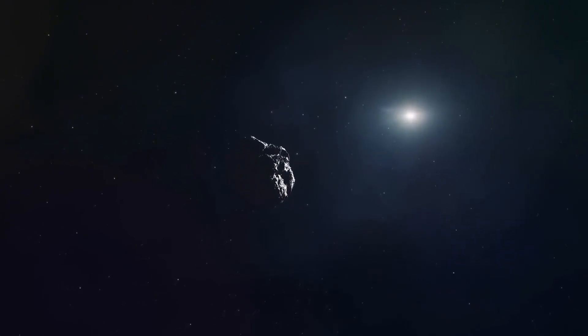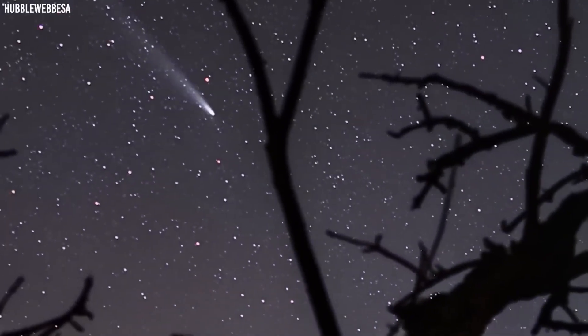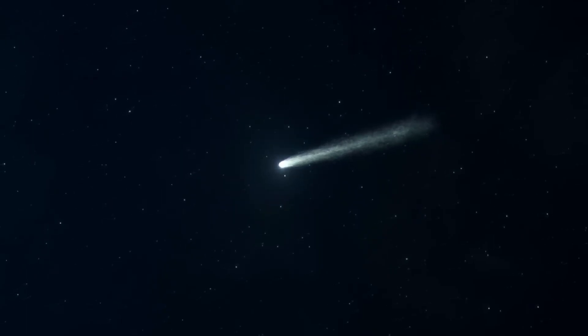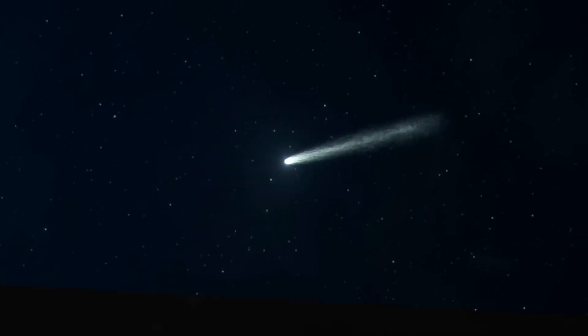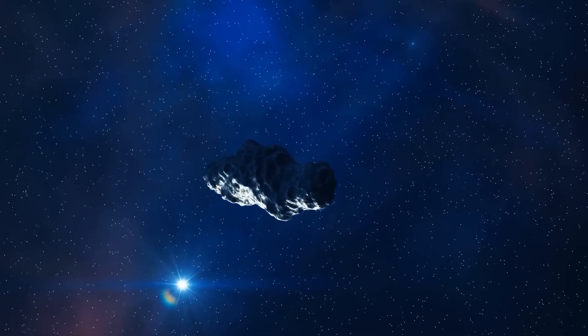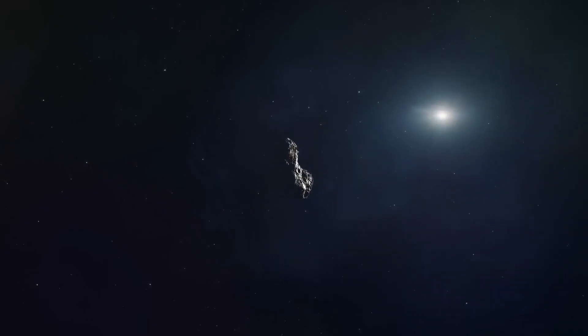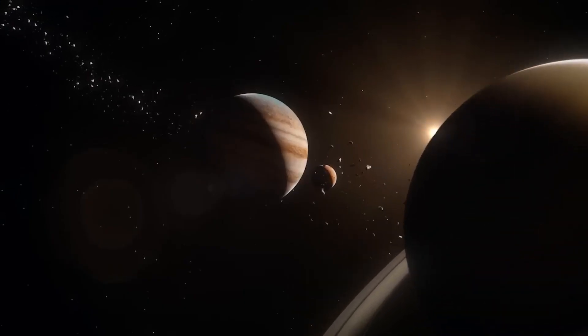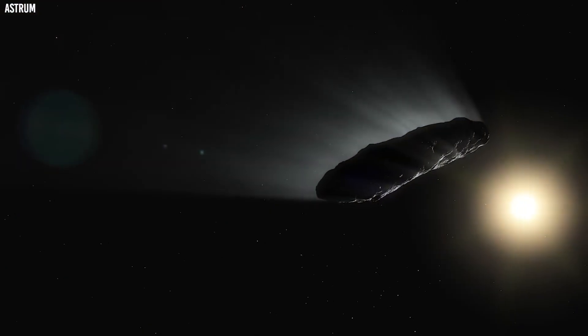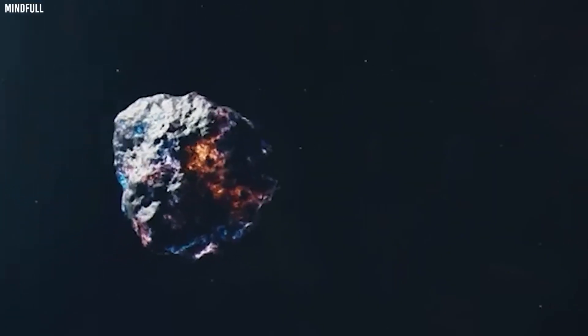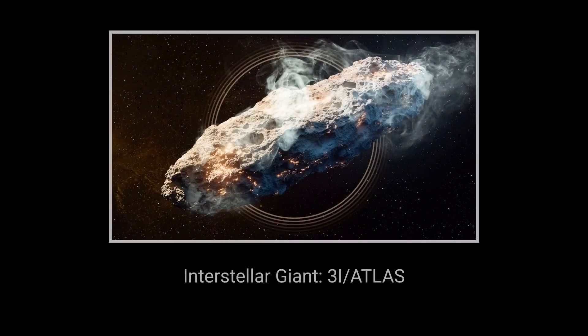Most comets from the Oort cloud show eccentricities near 1. 3i-Atlas's speed and trajectory proved no origin within the solar system's bounds. By that same day, observatories worldwide confirmed the approach velocity topped 58 kilometers per second, unaffected by the sun's gravitational influence. Dr. Lina Takahashi, a veteran survey scientist, recalled the reading was so extreme the system flagged it as erroneous, prompting manual verification. The plotted trajectory showed a near-perfect inbound line toward the constellation Lyra, well outside the solar system debris plane.